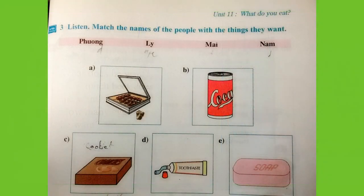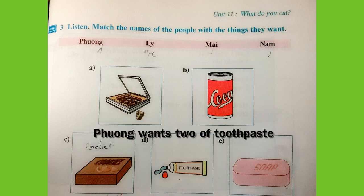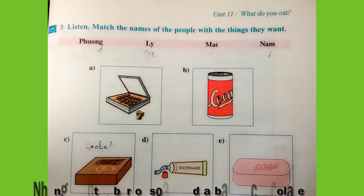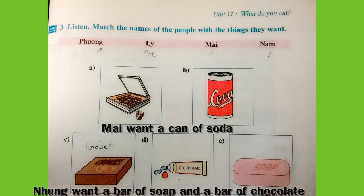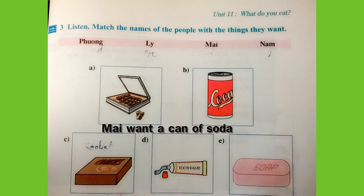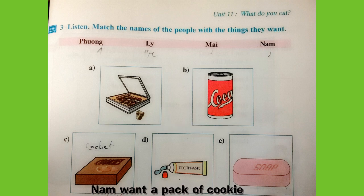Exercise 3: Listen. Write the names of the people and the letters of the things they want in your exercise book. Fung wants a tube of toothpaste. Yum wants a bar of soap and a box of chocolates. Mai wants a can of soda. Nam wants a packet of cookies.